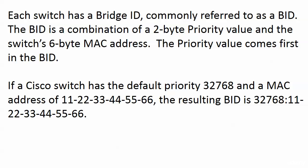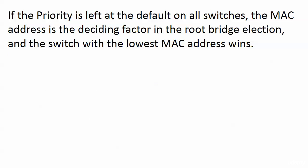The value that comes into play with our election is called a BID — a bridge ID. Each switch has one, and it's a combination of a two-byte priority value and the switch's six-byte MAC address, with the priority value coming first. So a switch with a default priority of 32768 and a MAC address of 11:22:33:44:55:66 results in a BID of 32768 followed by the MAC address. If priority is left at default on all switches, the MAC address becomes the deciding factor, and the switch with the lowest MAC address wins.